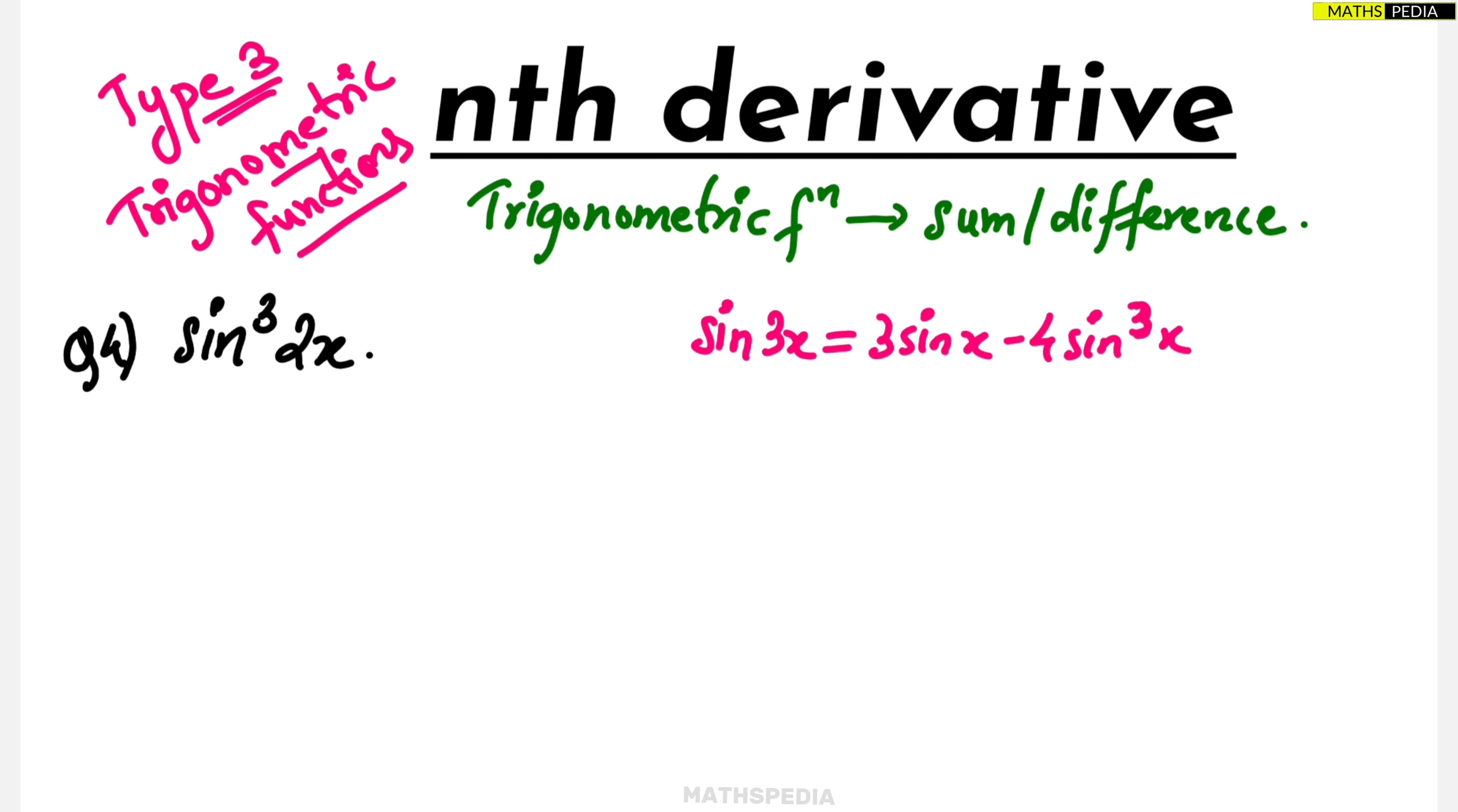Now in this particular thing we can see the cube is there. This particular thing I want, so shift everything to left hand side and keep this one here. So what will happen: sine 3x minus 3 sine x.